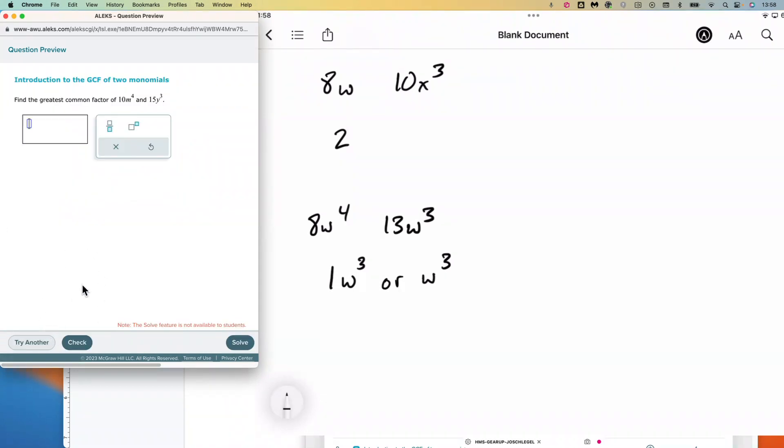We'll try another. We have 10m to the 4th and 15y to the 3rd. So the m's and the y's don't match, so we're not going to have any of that. The largest number that goes into both 10 and 15 is 5.